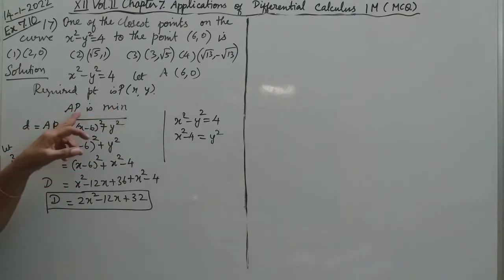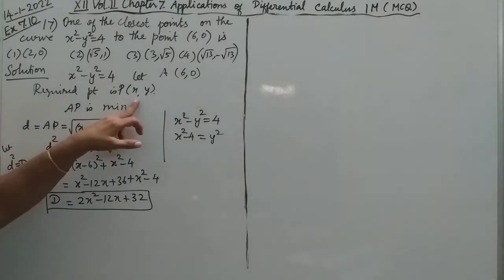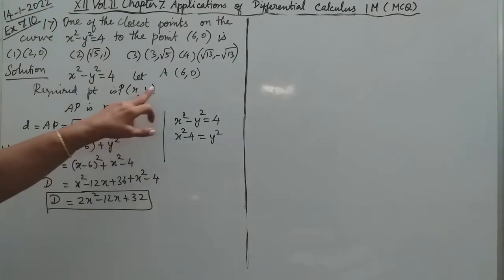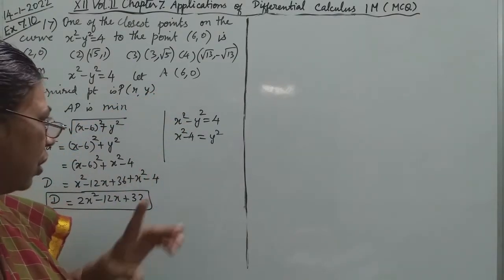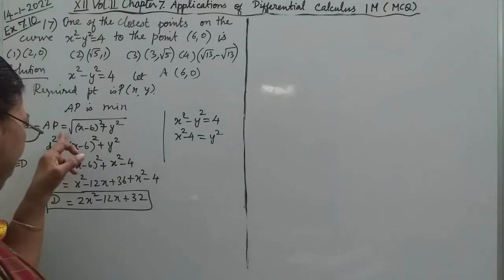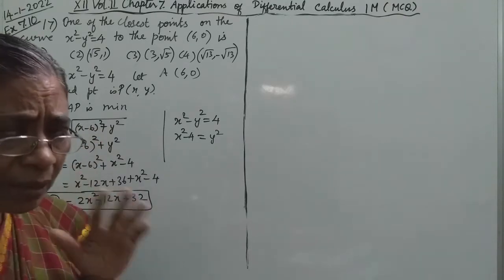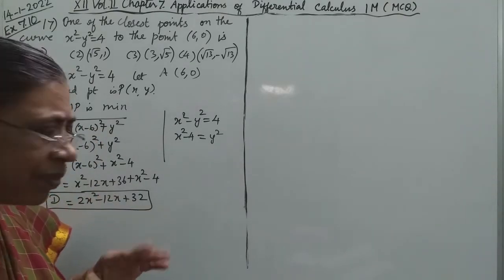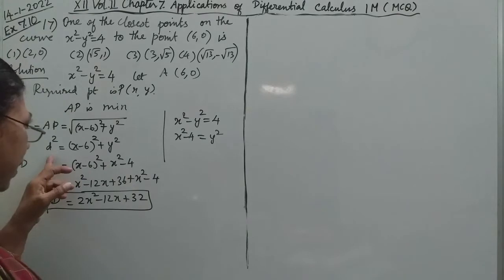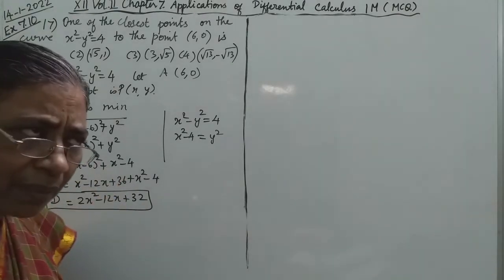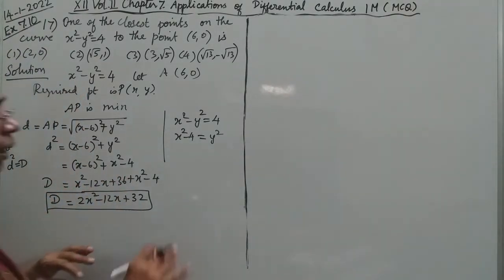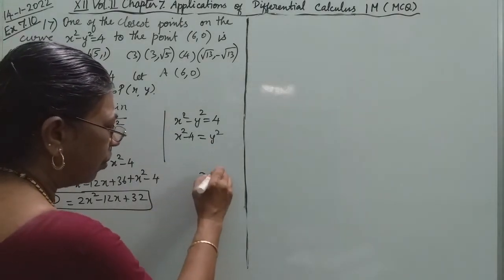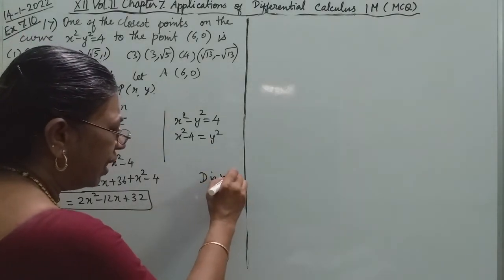For AP to be minimum, capital D must be minimum. Since D is minimum when D squared is minimum, we work with D squared. D is minimum means D prime equals zero and D double prime is greater than zero.